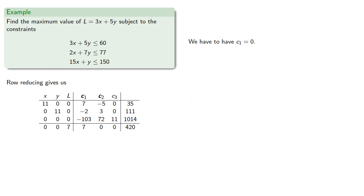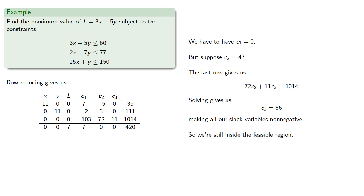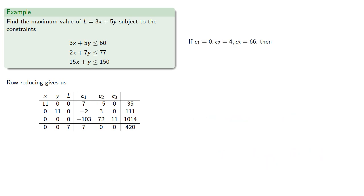So we have to have C1 equals zero. But suppose C2 equals, how about four? The last row gives us. Solving gives us. Making all of our slack variables non-negative, so we're still inside the feasible region. But if C1 is zero, C2 is four, and C3 equals sixty-six, then we find.